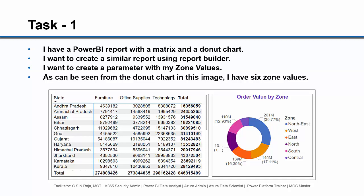I have a Power BI report with a matrix and a donut chart. I want to create a similar report using Report Builder and create a parameter with my zone values. As seen from the donut chart, I have six zone values. I want to create a parameter, similar to how we created parameters when bringing data from SQL Server in the JTM15 video.